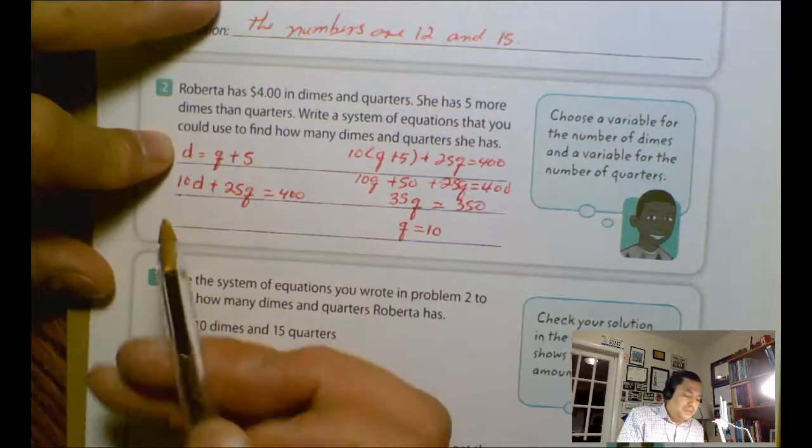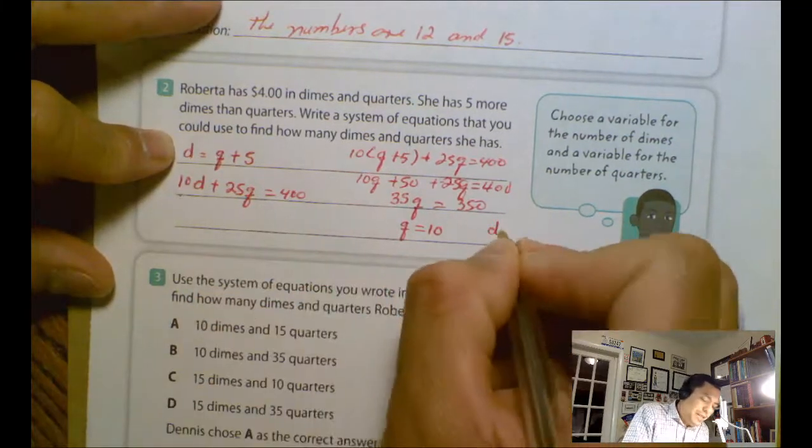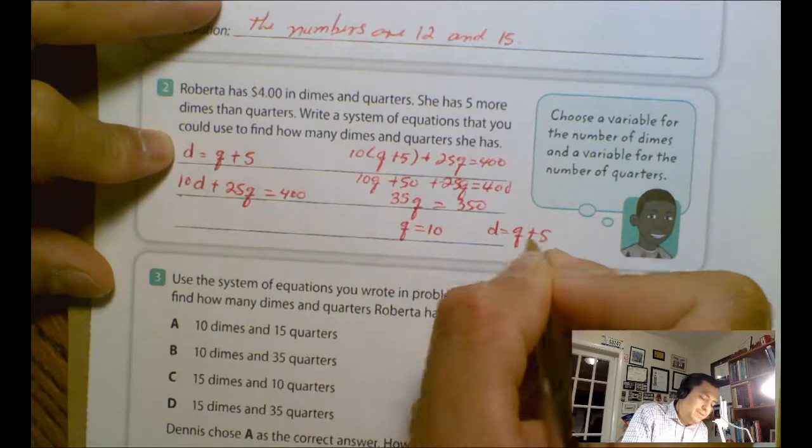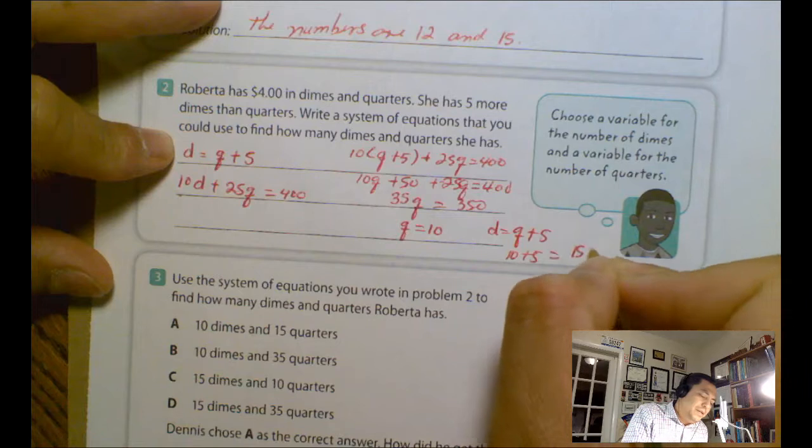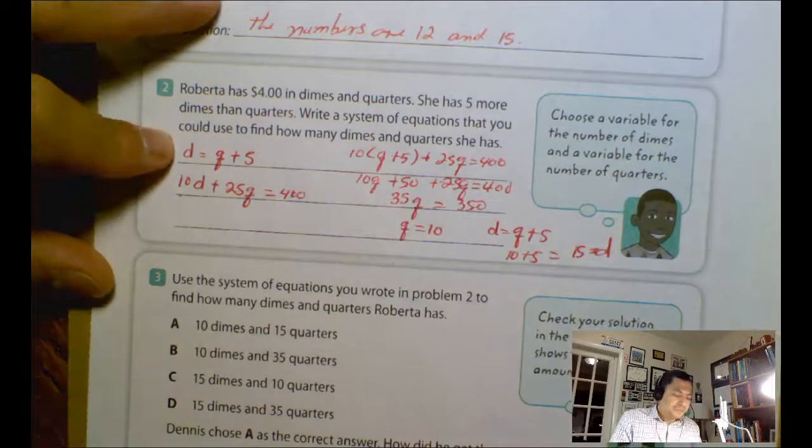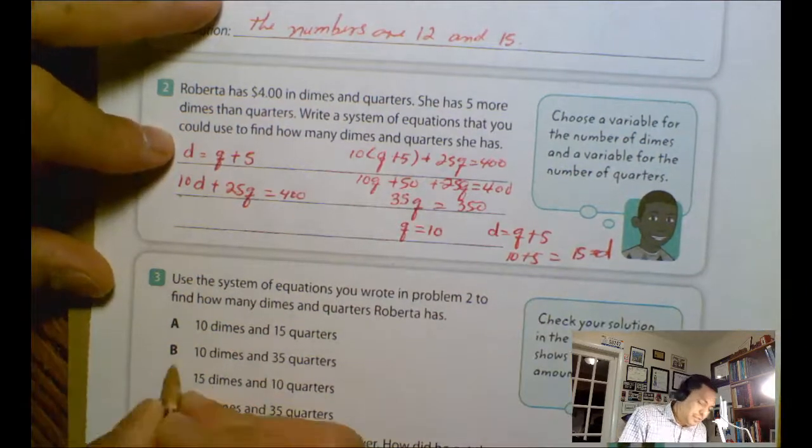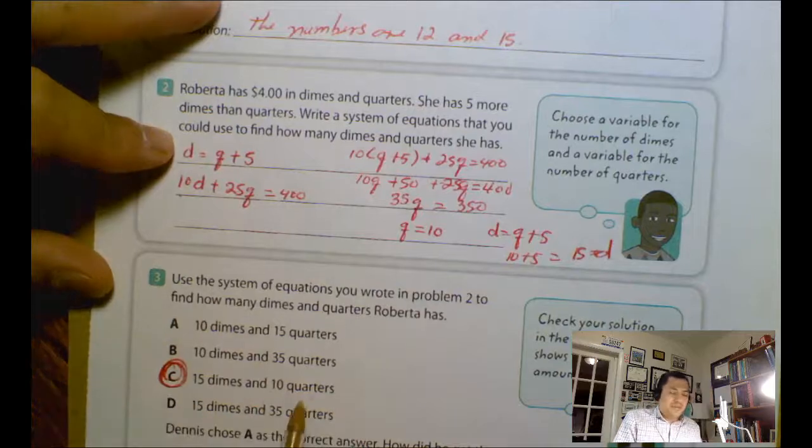Now I need to find dimes. So d equals q plus 5. So q is 10, 10 plus 5 equals 15. This equals dimes. So the correct answer is C: 15 dimes and 10 quarters.